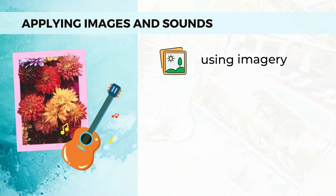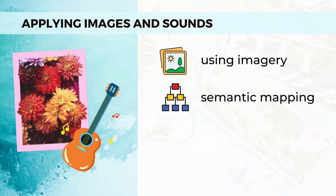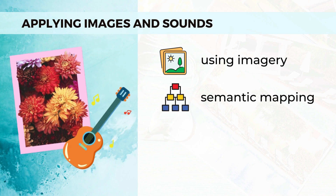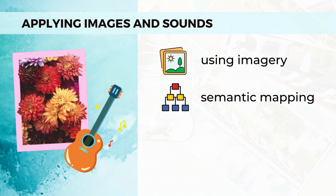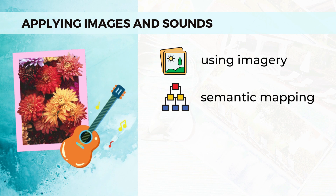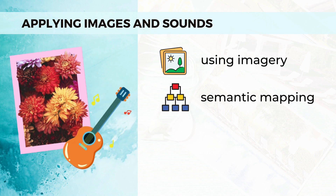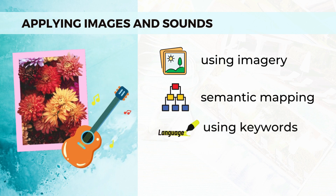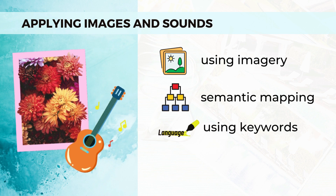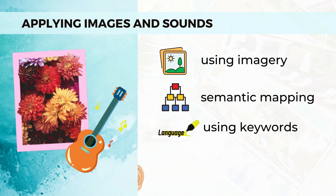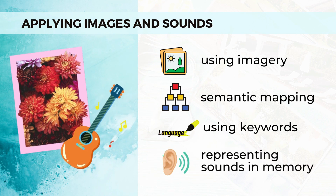The first one is using imagery. Next is semantic mapping. Semantic mapping is a strategy for graphically representing concepts. A semantic word map allows students to conceptually explore their knowledge of a new word by mapping it with other related words or phrases similar in meaning to the new word. Next is using keywords — a valuable technique used to memorize the meaning behind vocabulary words. And lastly, representing sounds in memory.